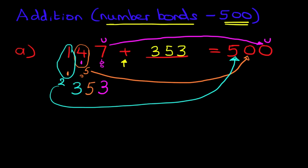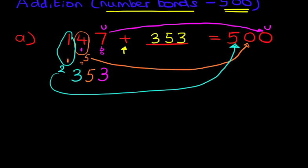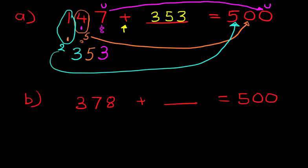It is a good way of working it out, but it's a little bit messy. What I'm going to do is I'm just going to scroll down, and we're going to have a look at a different example. This time we have 378 plus something equals 500.